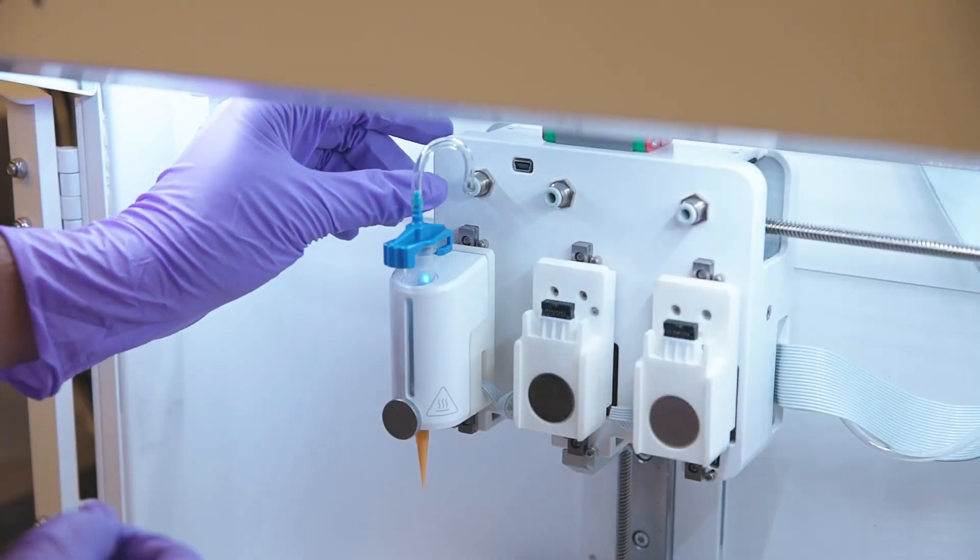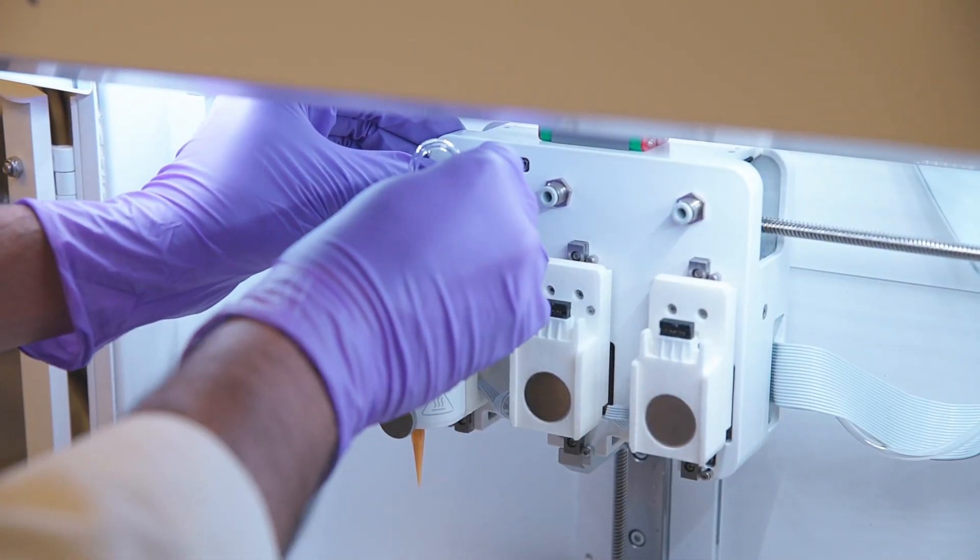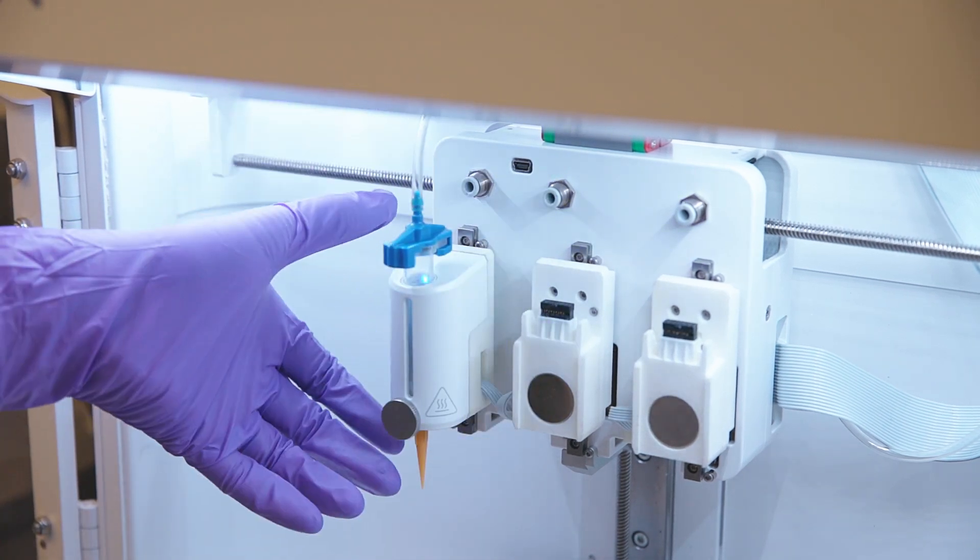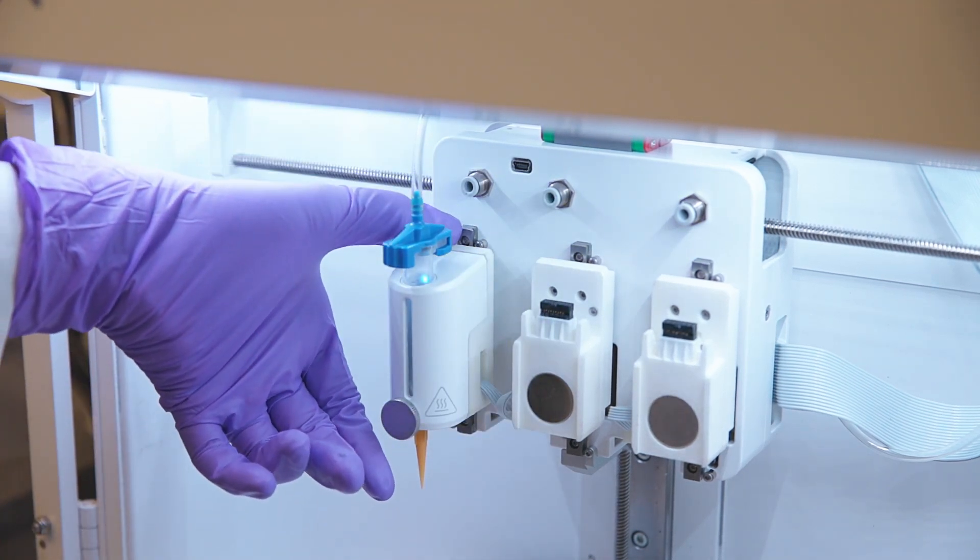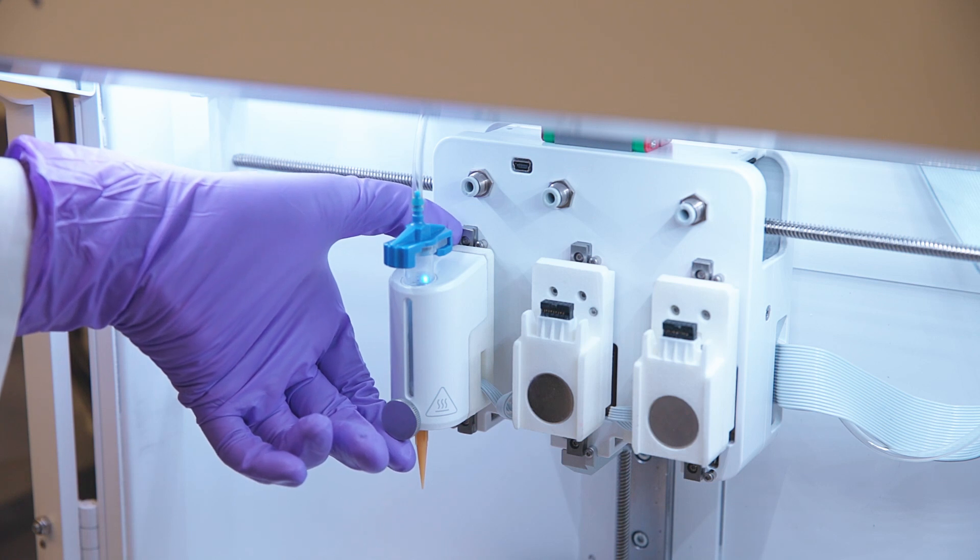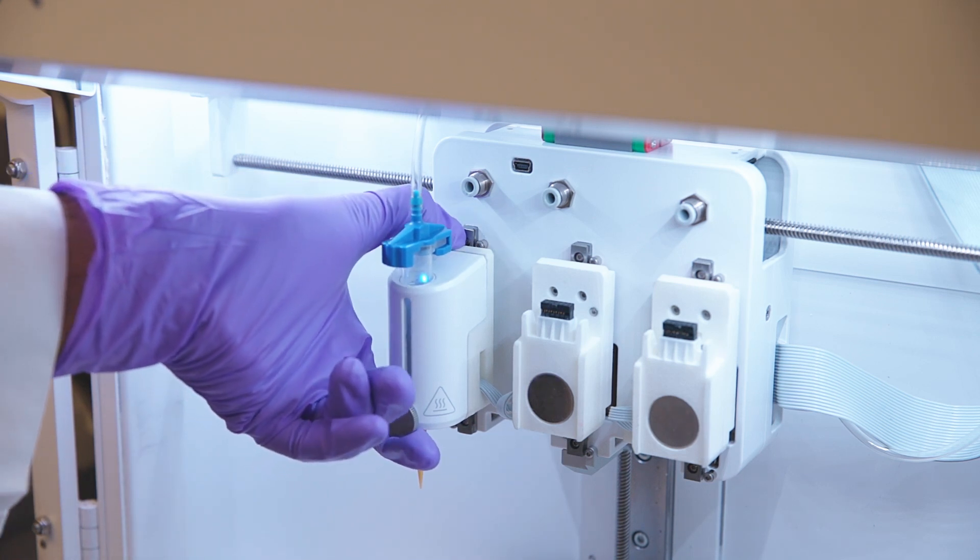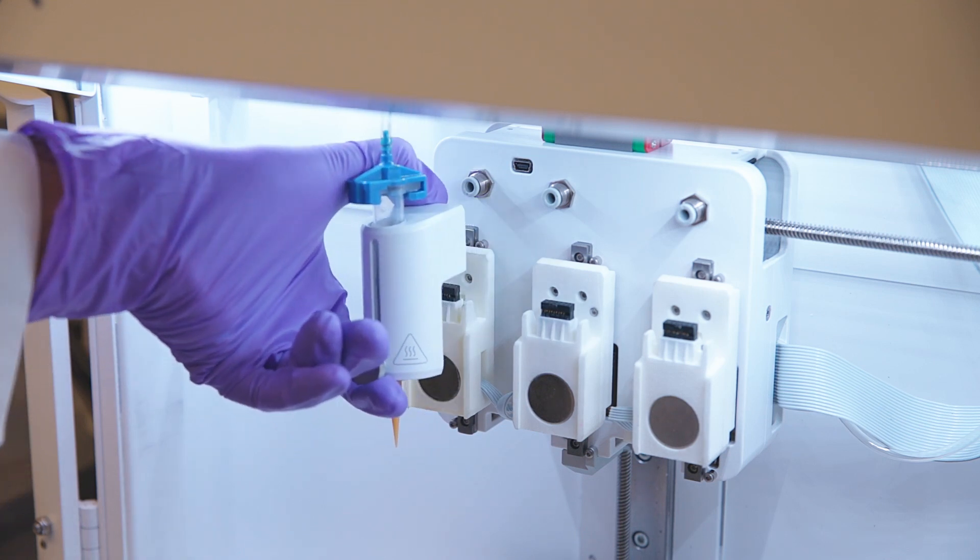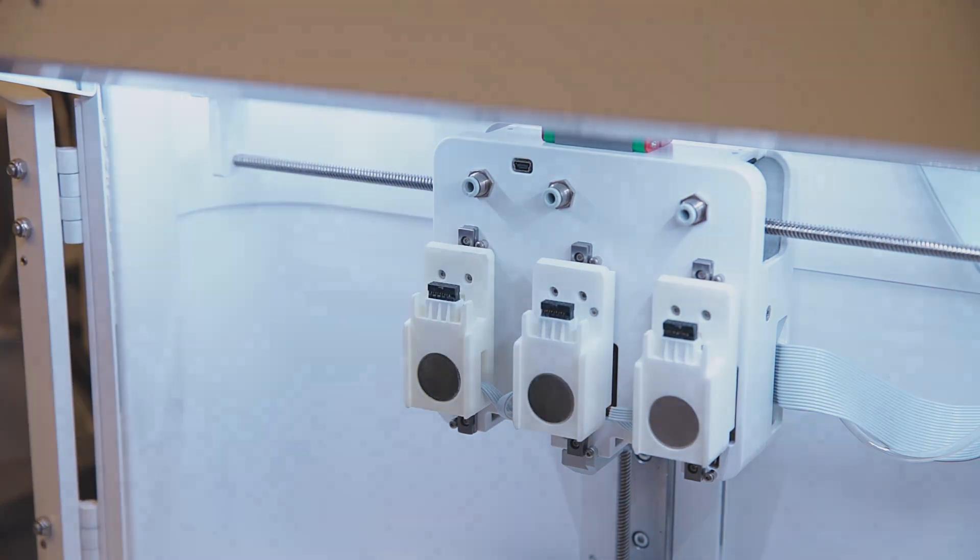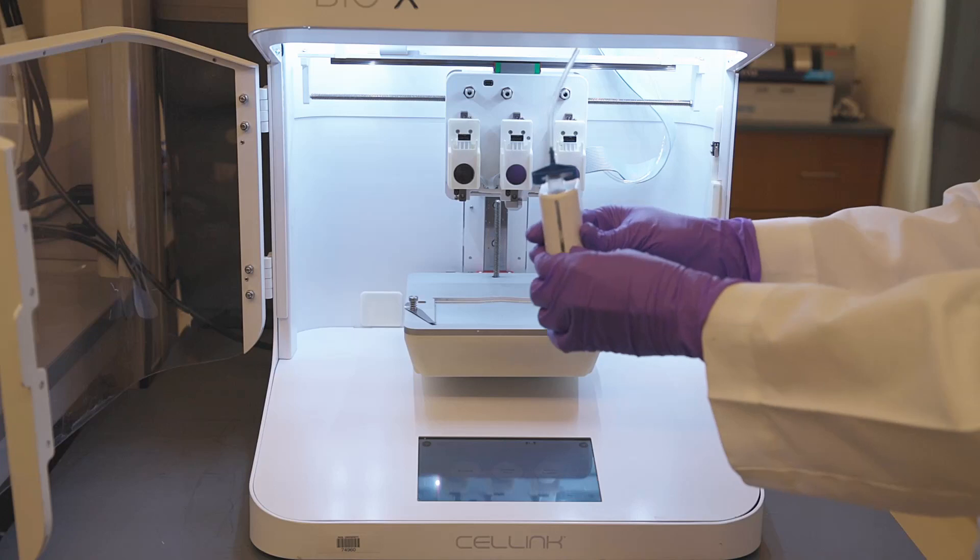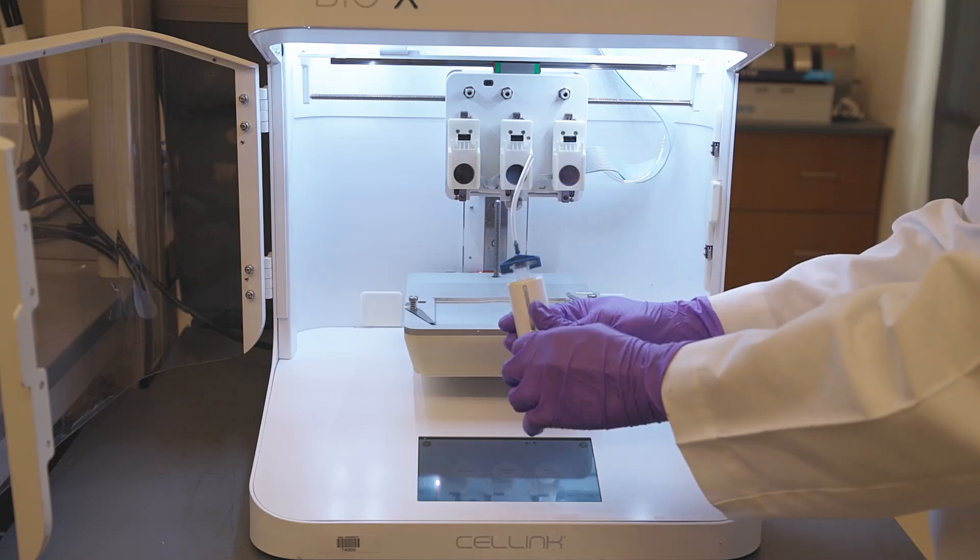To remove the mounted printhead, first disconnect the air compressor line by pushing this grey flap and gently pulling the line. Next, gently pull the printhead upwards by pressing on the back and holding the printhead in the front. Unscrew the screw in the front to remove the cartridge.